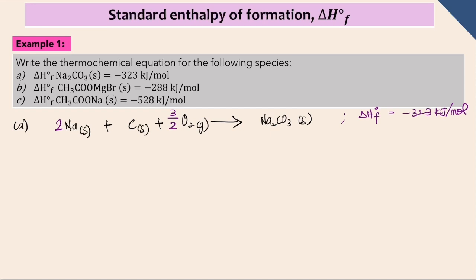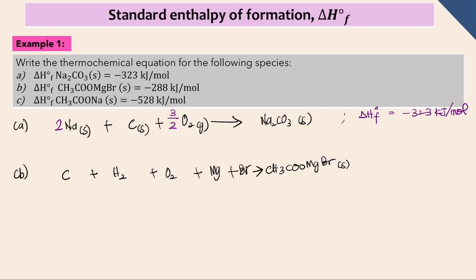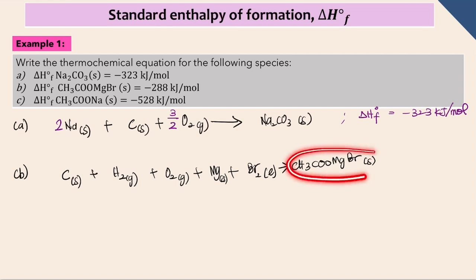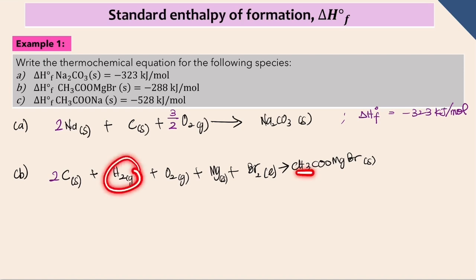Next for CH3COOMgBr, since this is standard enthalpy of formation, we start from the product side — 1 mole target. Write the reactants as the most stable elements with their phases: carbon (solid), hydrogen gas, oxygen gas, magnesium (solid), and bromine (liquid). Don't forget to write the phase for each element. The target product must always be 1 mole, so balance the equation on the reactant side. After balancing, write delta H_f^0 on the right side of the thermochemical equation.